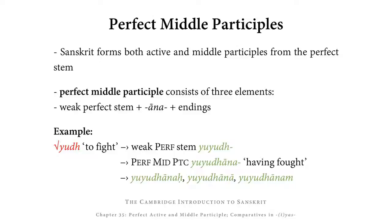The perfect middle participle consists of three elements: the weak perfect stem, the suffix ANA, and case endings. For example, on the basis of YUD, meaning 'to fight,' we get the weak perfect stem YUYUD, and on that basis we get our participle YUYUDDHANA, meaning 'having fought.' That then declines as YUYUDDHA-NACH in the masculine, YUYUDDHA-NA in the feminine, YUYUDDHA-NAM in the neuter.